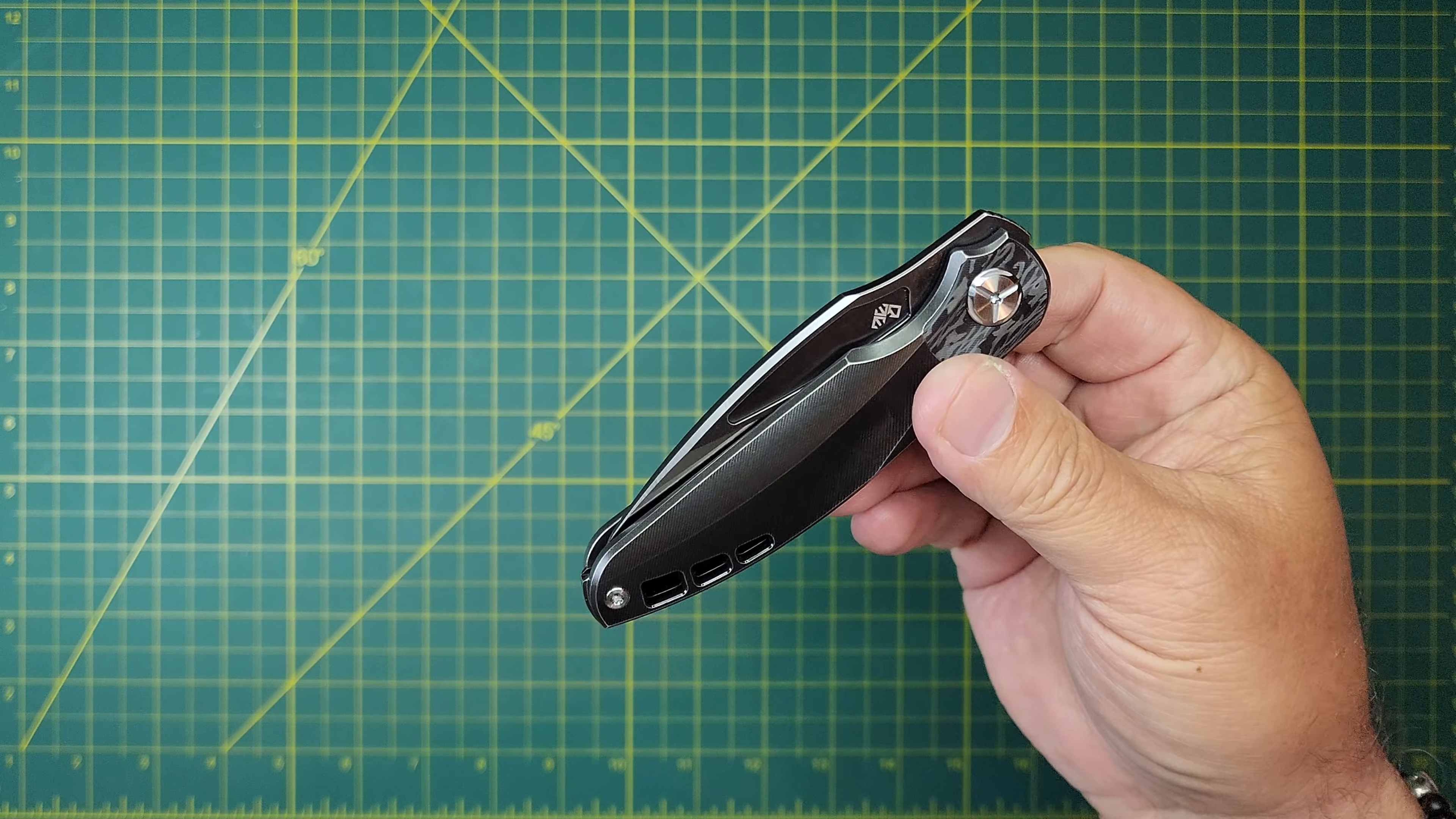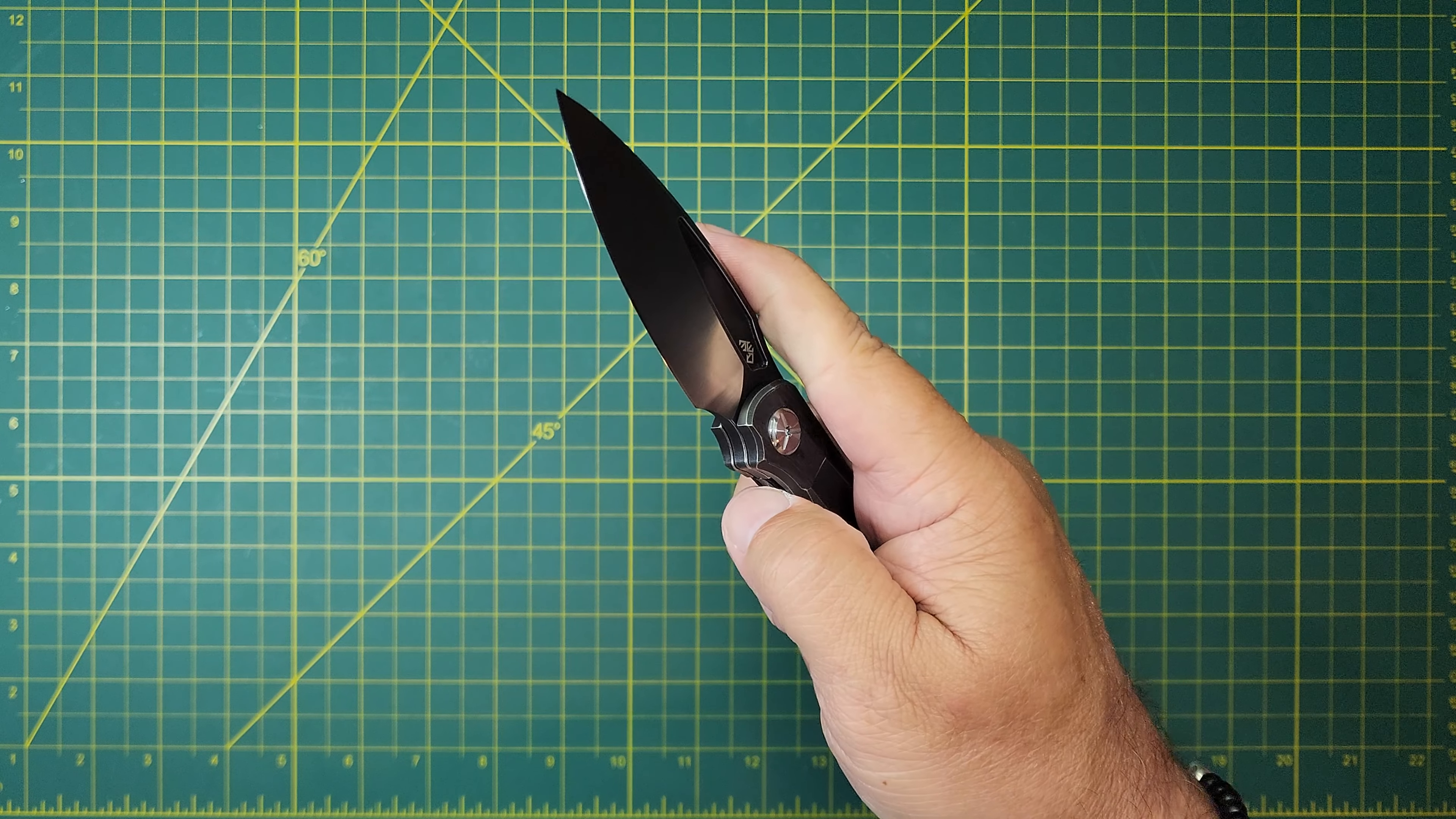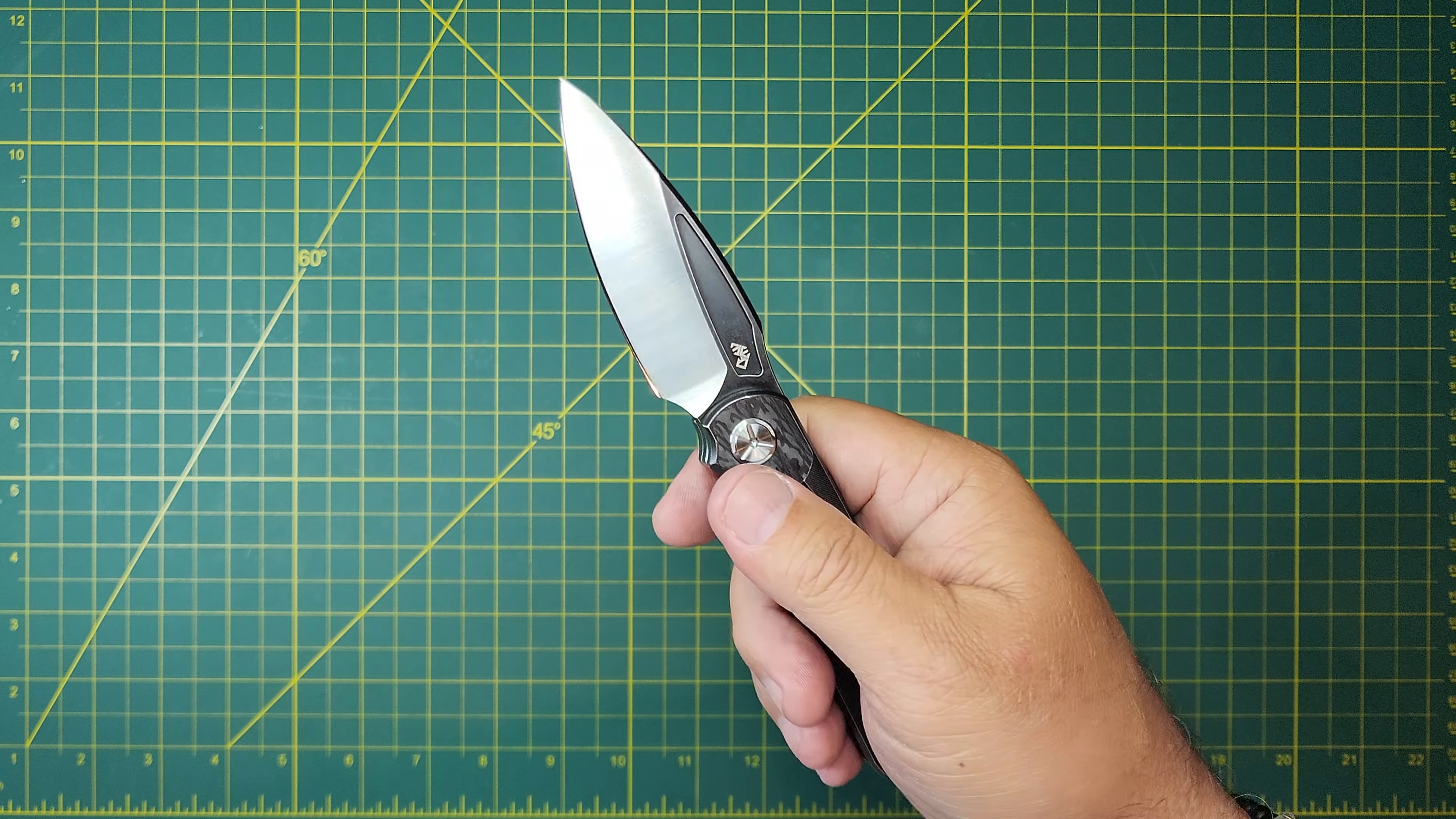Closing action, pretty much drop shut. Once you break that detent, give it a little coaxing, it'll run all the way to the bottom. So really smooth, runs really well. Yeah, I like it.